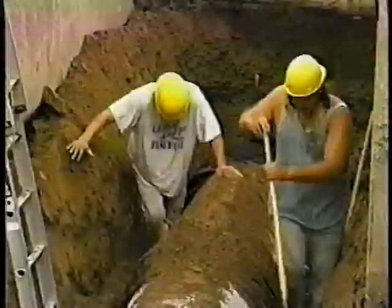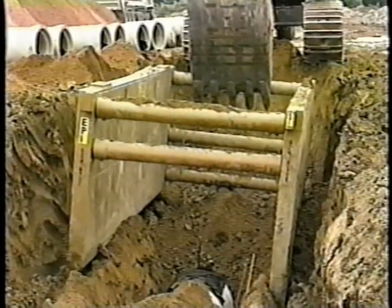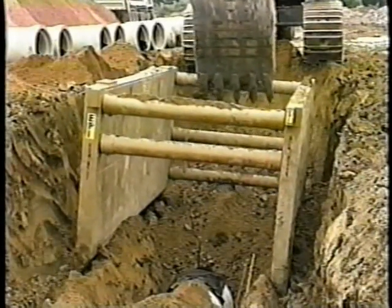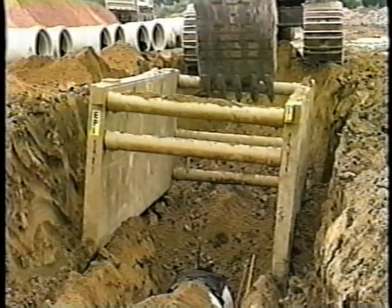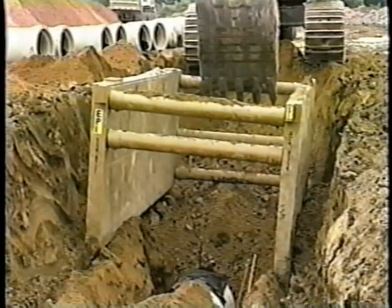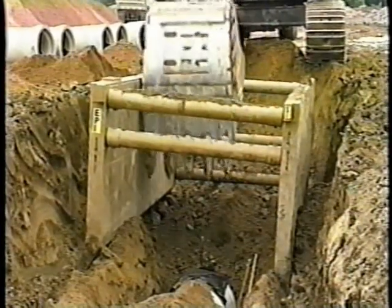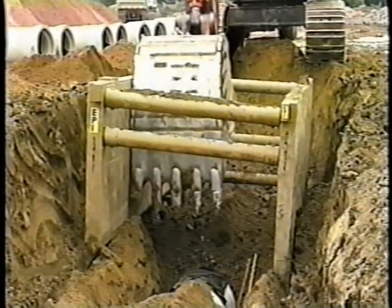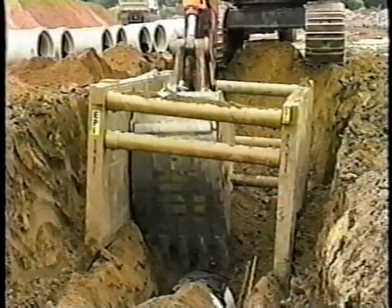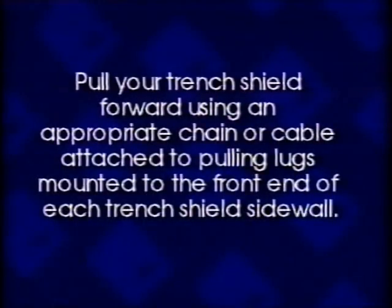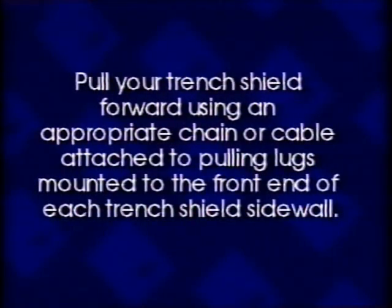If your spreaders are under six feet or 1.8 meters, use the excavator bucket to pull your trench shield forward. If your spreaders are over six feet or 1.8 meters, pull your trench shield forward using an appropriate chain or cable attached to pulling lugs mounted to the front end of each trench shield sidewall.